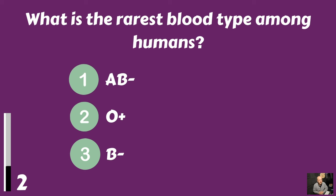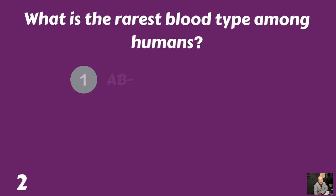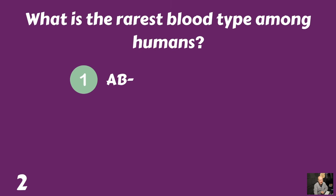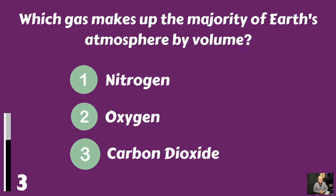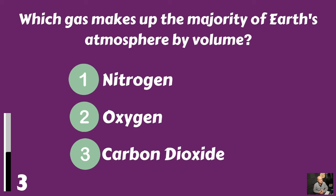The rarest blood type among humans is AB negative. Which gas makes up the majority of Earth's atmosphere by volume? Nitrogen, oxygen, or carbon dioxide? By volume, it would be nitrogen.